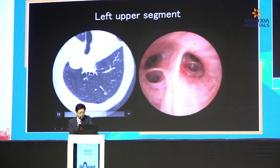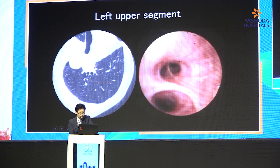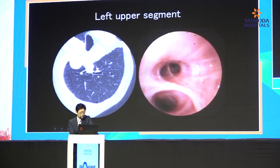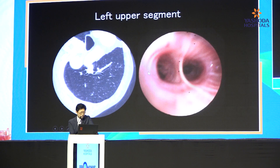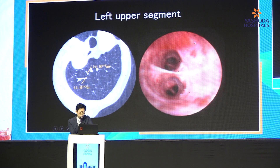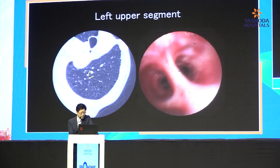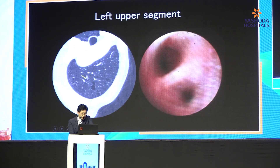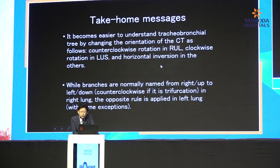Proceeding inside, similar to the right upper lobe but opposite — downside is small one and upside is small two, so please take care. In this patient, following this route, here you can see a tiny trifurcation. The target bronchus is here — you can approach the target region.